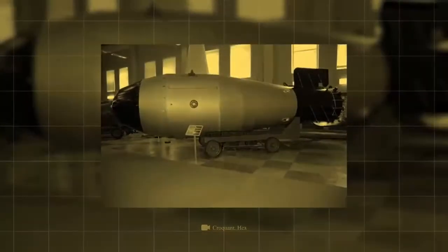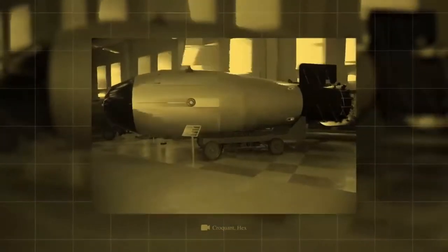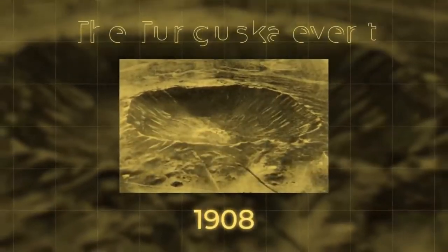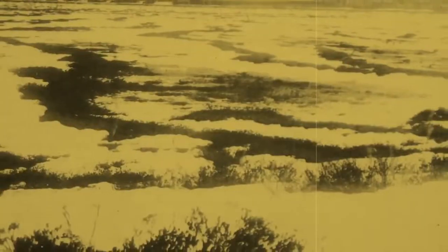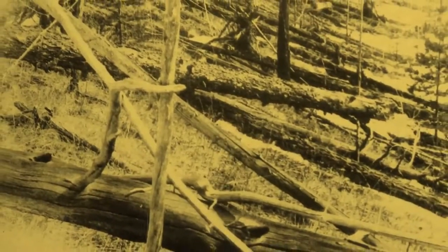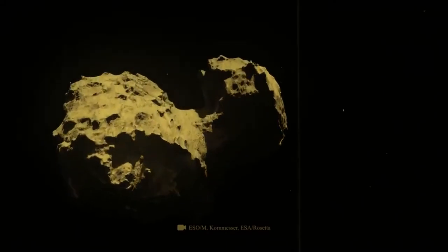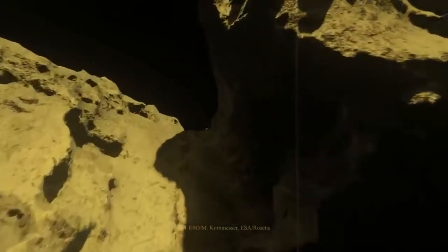According to other sources, the power reached 50 megatons, which is equal to the effect of the largest thermonuclear Tsar Bomba. The incident in 1908 is known as the Tunguska Event. According to the most common version, our planet collided with a part of a comet, a fragment of which provoked a grand explosion.